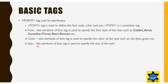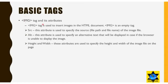The color attribute specifies the color of the text, such as red, blue, or green. The size attribute specifies the size of the text. Now let's see one example to understand the font tag and its attributes.